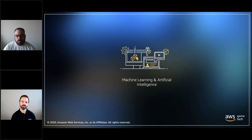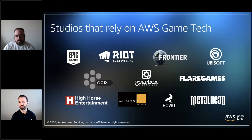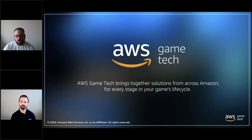We also have customers using AWS machine learning services to detect and isolate cheaters and to look at usage patterns to predict when players are likely to churn or leave the game. More than 90% of the world's biggest public game companies — including Activision, Supercell, and Ubisoft — use AWS. Our customers span everything from AAA studios to two- or three-person indie studios. Whether you're a team of one or a thousand, it's about making a game players want to play.